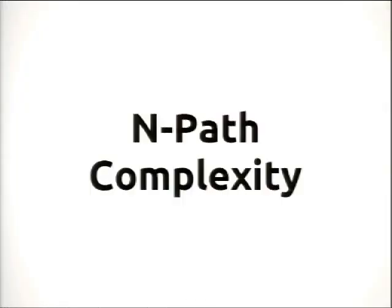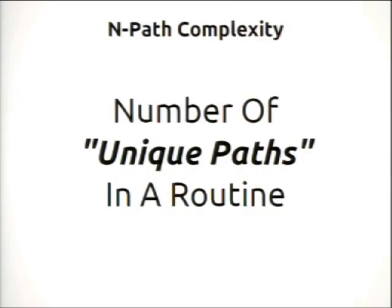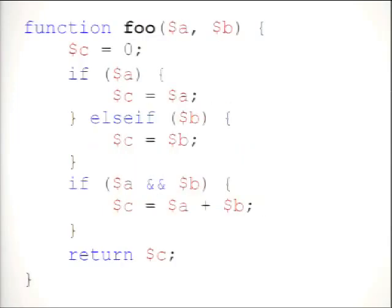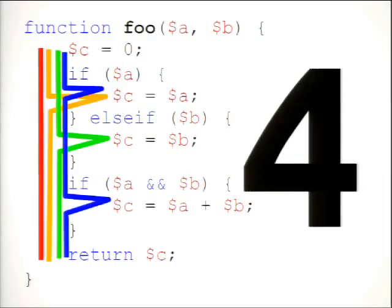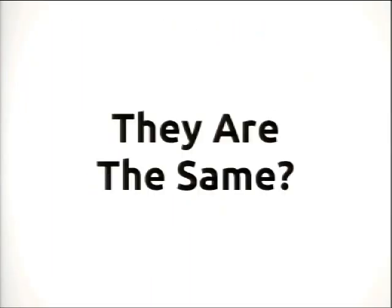Let's talk about n-path complexity, which on the surface is very similar to cyclomatic complexity. It's the number of unique paths in a routine. Taking that original code base, we can execute it without going inside any of the ifs — that's one path. We can go into only the first one — a second path. We can go into the else, or into the first of the else. So we have four paths. Notice that for that example they're the same, but in general they won't always be.